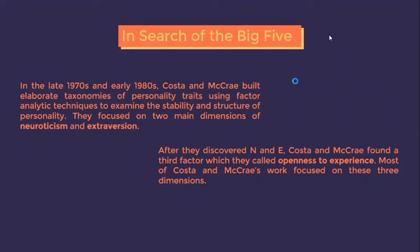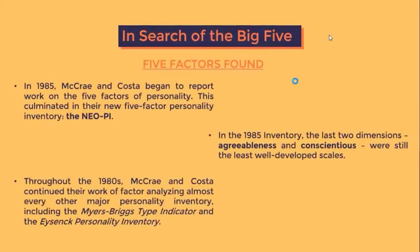The study of traits has been ongoing since then, and eventually Costa and McCrae in the late 1970s and early 1980s built elaborate taxonomies using factor analytic techniques. They focused on two main dimensions: neuroticism and extroversion, then discovered a third factor — openness to experience. On 1983, McCrae and Costa were still talking about three factors, but by 1985 they began to report work on five factors, culminating in their NEO Personality Inventory. NEO represents the three personality factors and PI stands for personality inventory.